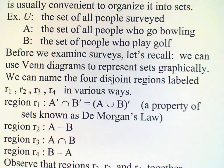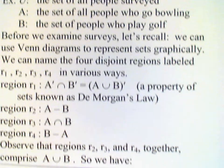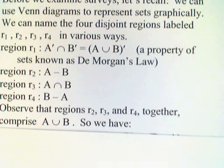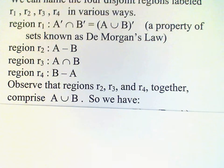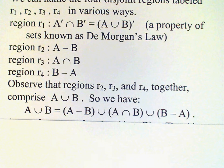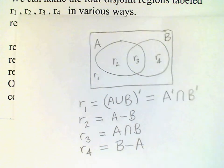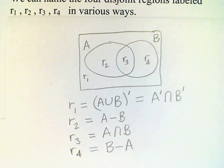If we wanted to represent several of these regions, for example r2, r3, and r4, these would represent the union of A and B. So we can write A union B is A minus B union A intersect B union B minus A.